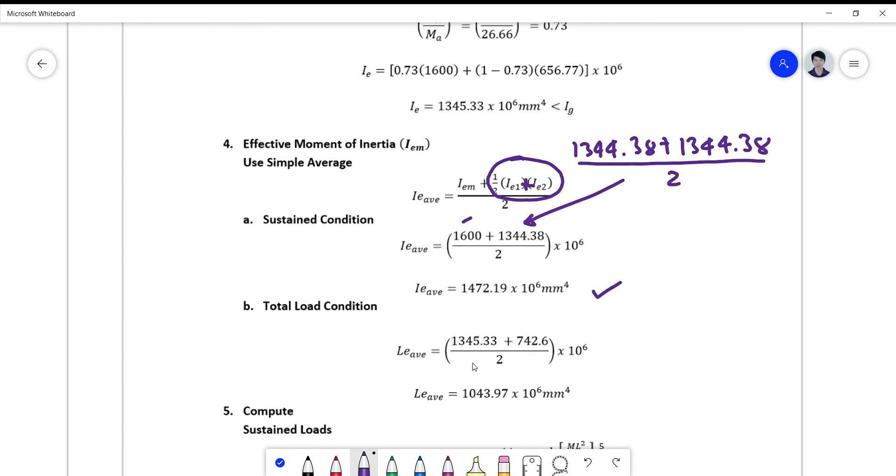And for the total load condition, we have the 1345.33 and 742.66. Again, you take the average of this. You get 742.6 plus 742.6, you just divide it by 2, you get the same value here. Then you get I average, 1043.97.